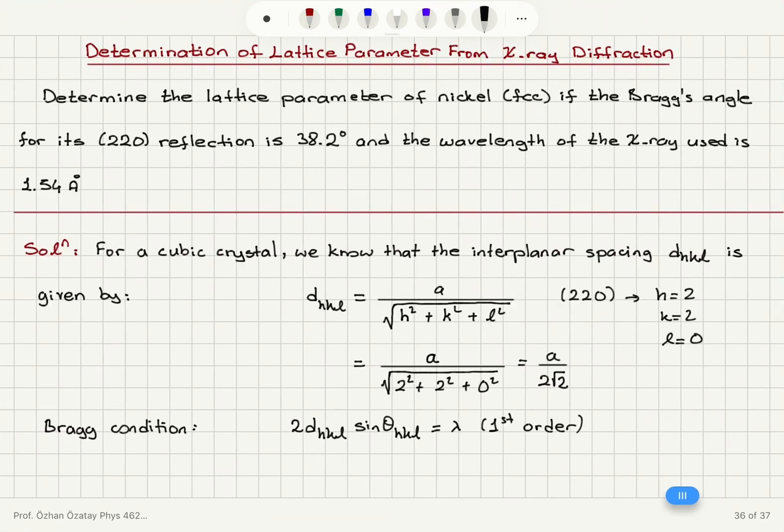So, for DHKL, I'm going to substitute A divided by 2 square root 2. This will be 2A divided by 2 square root 2, and I have sine of the angle 38.2 degrees. And this must equal one wavelength, 1.54 angstroms.